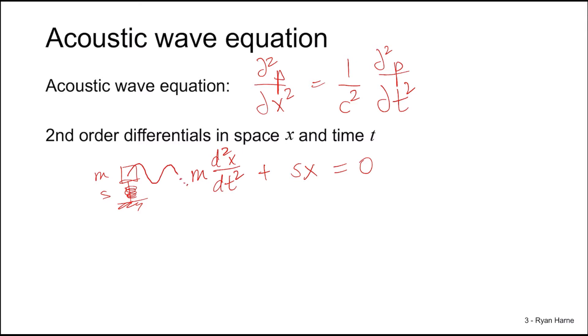We see second order differentials in the acoustic wave equation. We have del squared p del x squared, and we also have del squared p del t squared. And there is an equality between them and proportionality according to the constant one divided by c squared. So do we find oscillations in the acoustic wave equation?